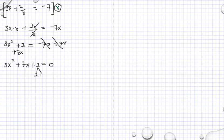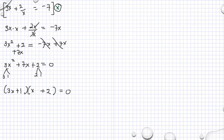So this factors as 2 and 1, and 3 and 1. If I multiply 3 and 2, that's 6, and then plus 1 gives us 7. So we have 3x there and then x there, multiplied by 2 and by 1, is equal to 0. Now we're going to find the roots.